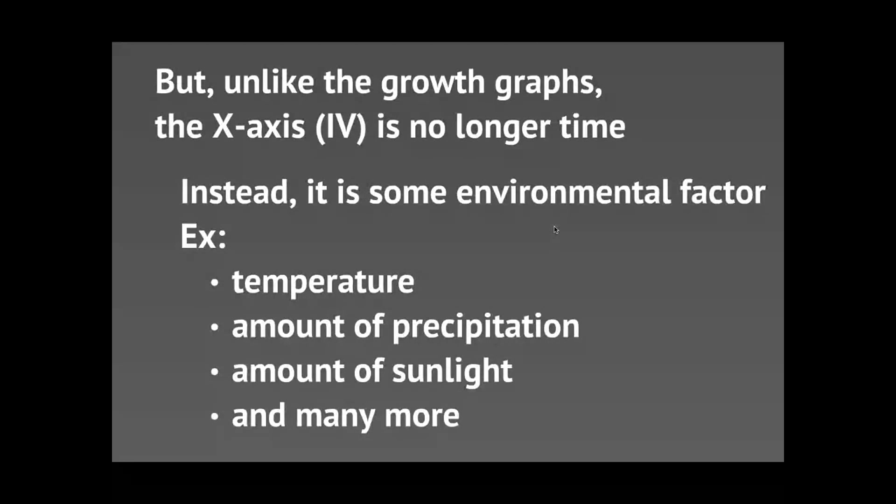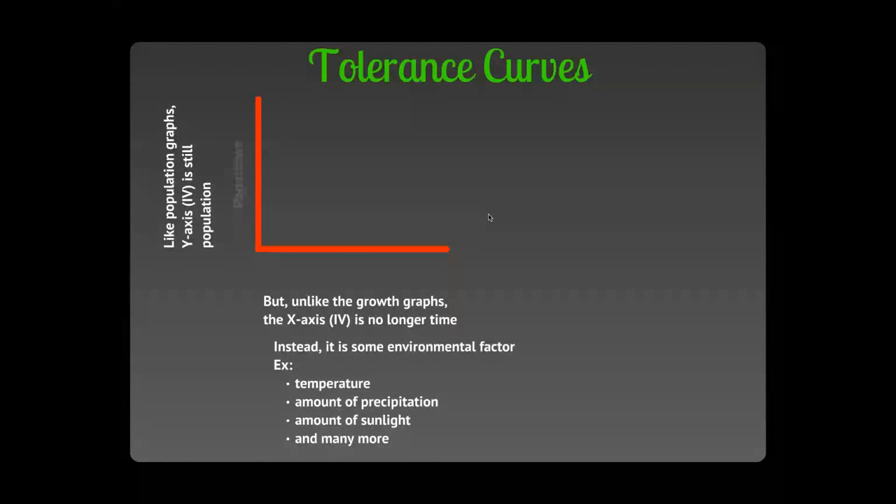So you might be like, well I want to know does this tree grow in areas where it's really wet or really dry, or where there's a lot of light or a little light. So we're going to be plotting those environmental factors on our x-axis. So population on our y. And let's just say this is a great example - maybe we put temperature on our x.